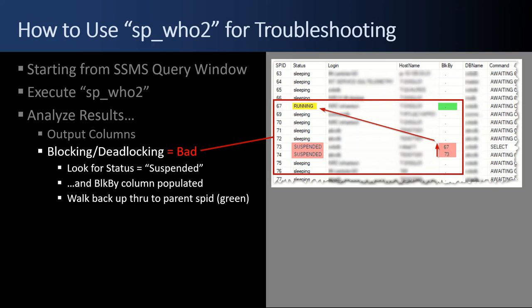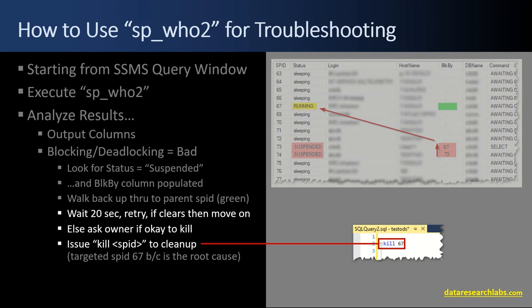Next up: how do we fix that? By fix, I mean the symptom — we're not addressing the root cause, which could be many different reasons in the source code. In your dev, test, and stage environments — don't do this in prod; leave it to the DBAs in prod — after identifying blocking or deadlocking, I'd recommend waiting 20 to 60 seconds and retrying SP_Who2. See if it cleared itself. If it did, you just have a busy server where processes are blocking each other because one's doing a select, another an update, another an insert — give it time. It's when you have three, four, or five minutes of blocking, or blocking every time you run SP_Who2, that you start to dig in and do more research.